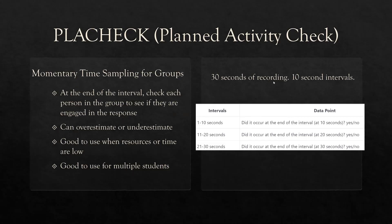With 30 seconds of recording in 10-second intervals, just like momentary time sampling: 1 to 10 — did it occur at the end of the interval? 11 to 20 — did it occur at the end? 21 to 30 — did it occur at the end? Let's not make this harder than it is.